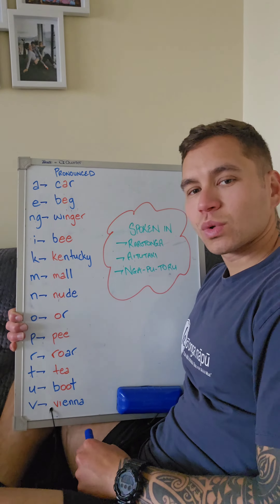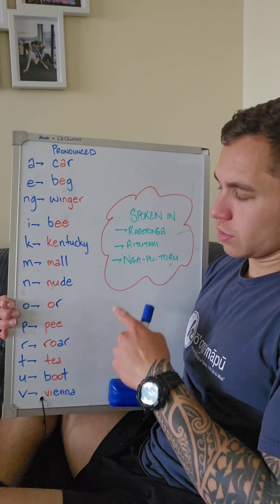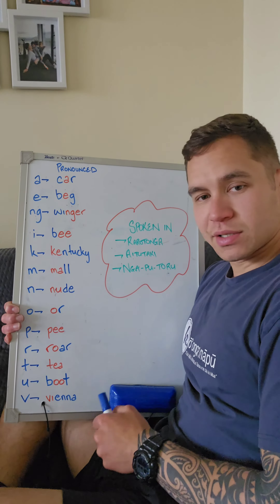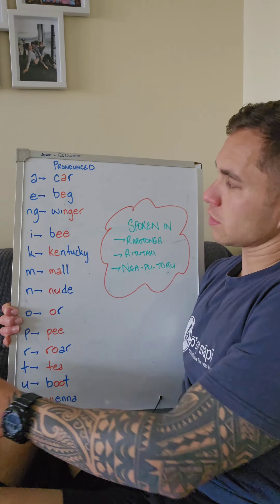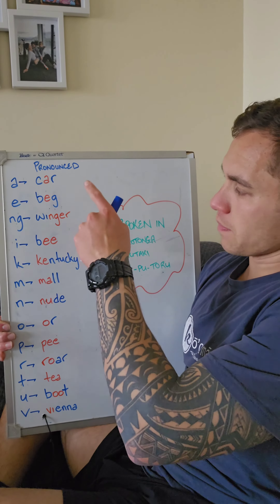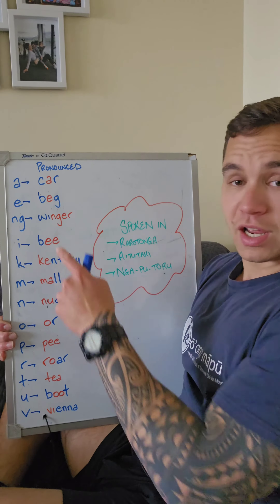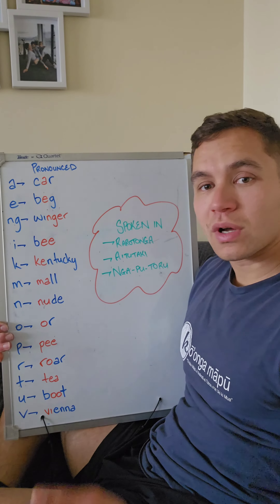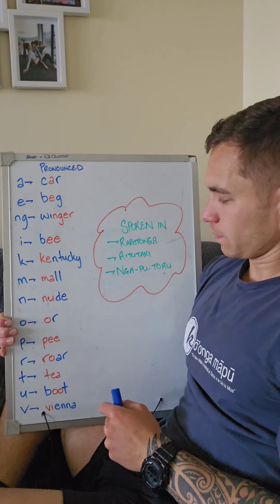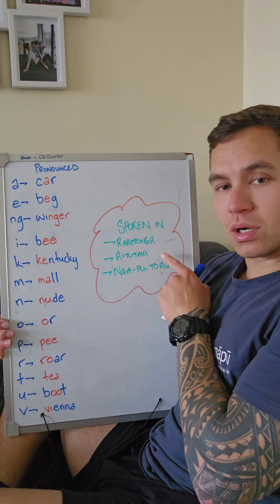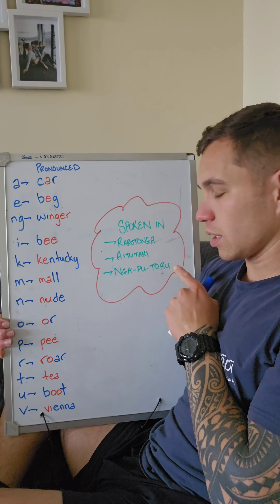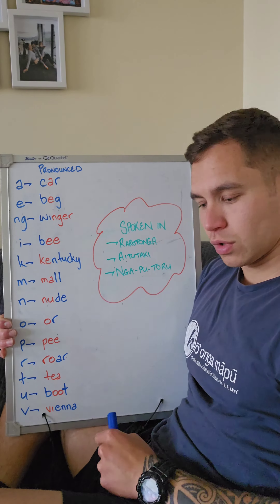Kia ora, welcome back to Kuki Learning. Here you can see our high-tech iPad Pro Plus 20,000. Today I'll be teaching you the Cook Islands Māori alphabet. This is spoken in Rarotonga, Aitutaki, and Ngātū Toru.